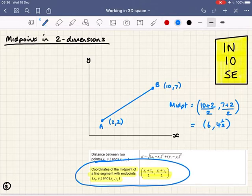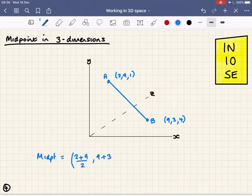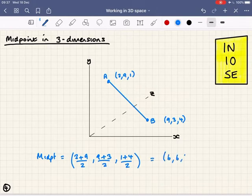Well, when we work in three dimensions, nothing changes here at all. The only thing we've got to do is take into account the fact there's a third coordinate, which is our z coordinate. So here our midpoint would once again be just the averages of the three coordinates. The x coordinate, 3 plus 9 over 2. The y coordinate, 9 plus 3 over 2. And the z coordinate this time, 1 plus 4 over 2. And we'll work that through. That gives us 6, 6, and 2.5 as our x, y, and z coordinates.